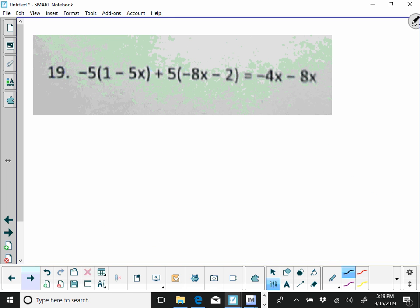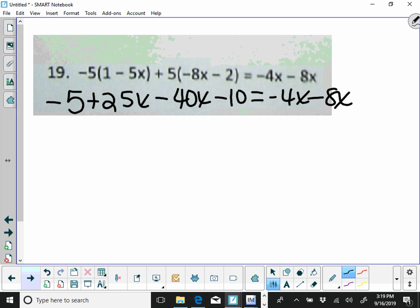So last one I'm going to do over here. We're going to distribute first, so it gives me negative 5 plus 25x minus 40x minus 10 is equal to negative 4x minus 8x. Combine your like terms. So 25 minus 40 is going to give me negative 15x, and negative 5 minus 10 is negative 15.